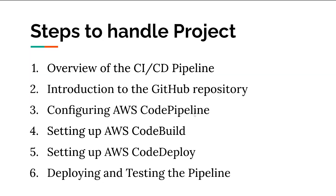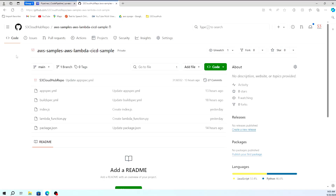Let's see what we're going to discuss in today's session. We'll cover an overview of the CI/CD pipeline and the general concept of CI/CD and its importance in modern software deployment. Next, we'll look at the GitHub repository containing the Lambda function, set up AWS CodePipeline to automate the process, configure AWS CodeBuild to package our Lambda function, and set up AWS CodeDeploy to manage deployment. Finally, we will deploy the pipeline and test its functionality.